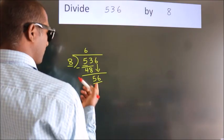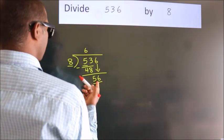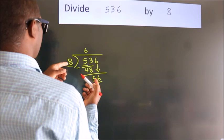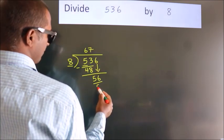So, 56. When do we get 56 in the 8 table? 8 times 7 is 56.